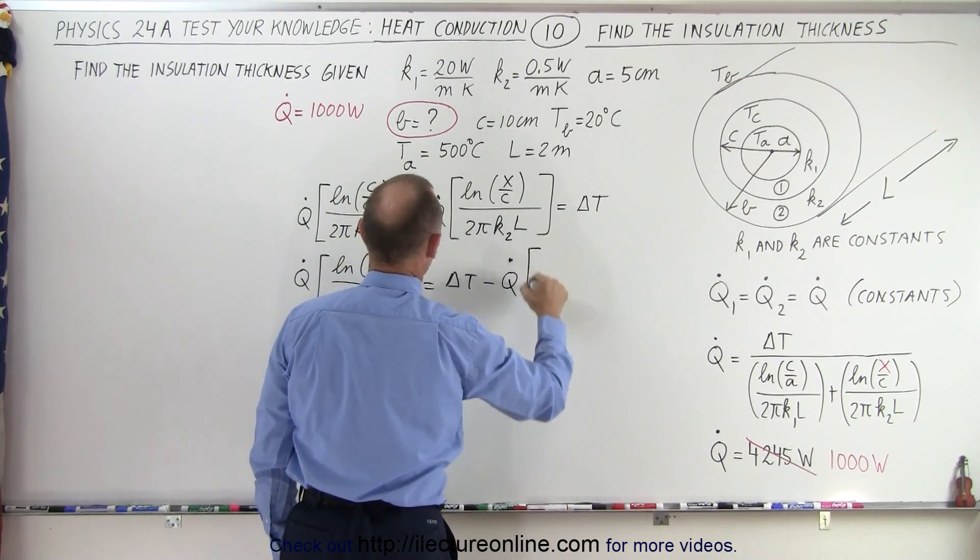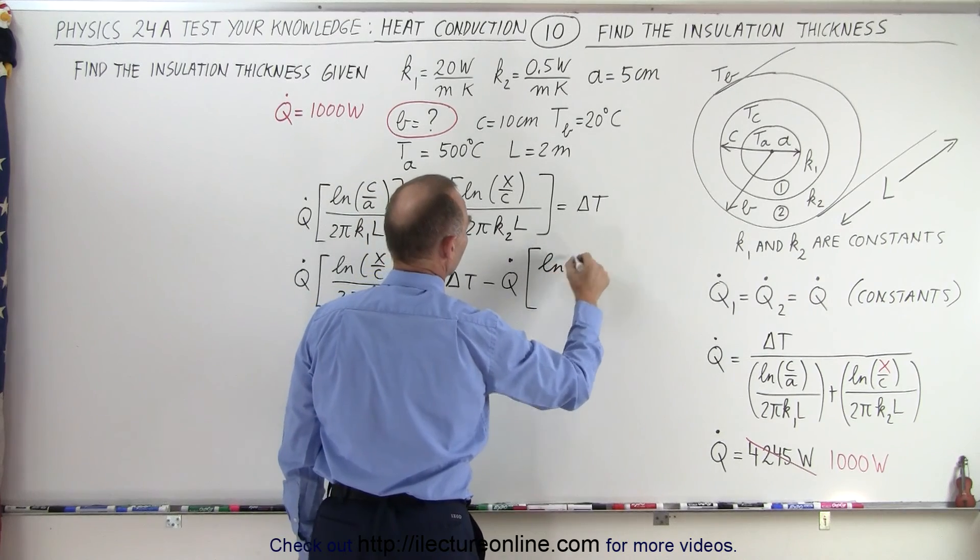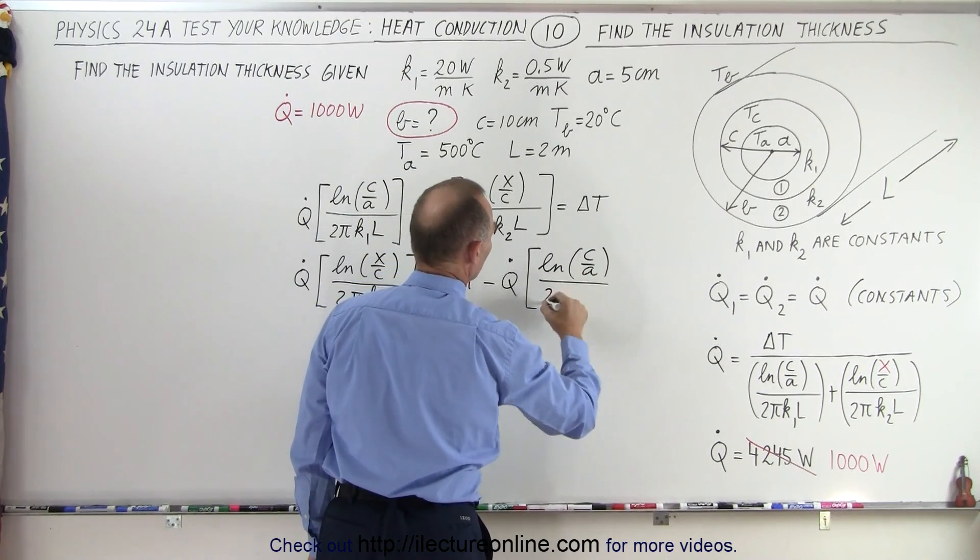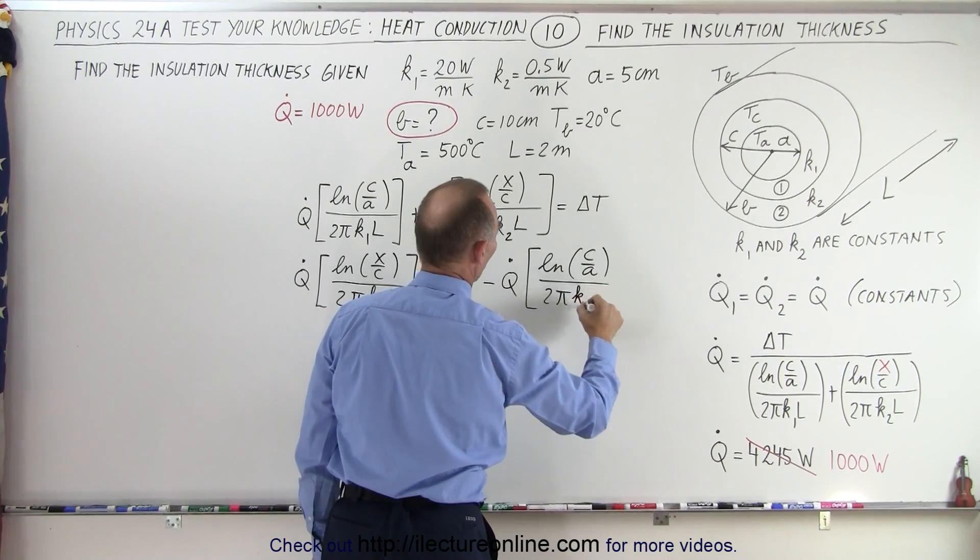That would be q dot times the natural log of c over a divided by 2 pi k1 l.